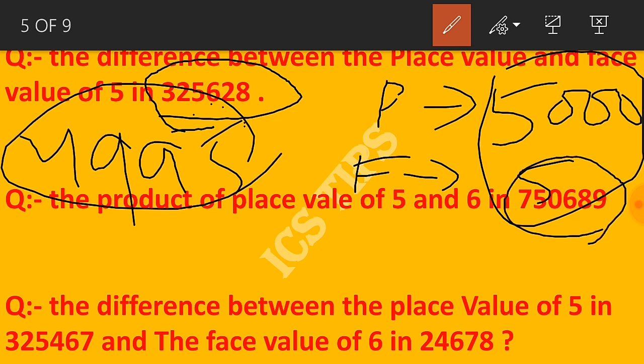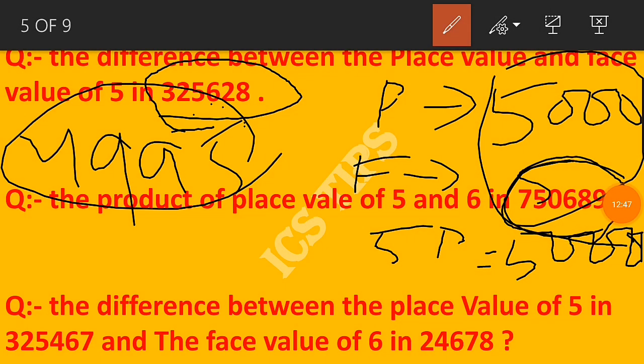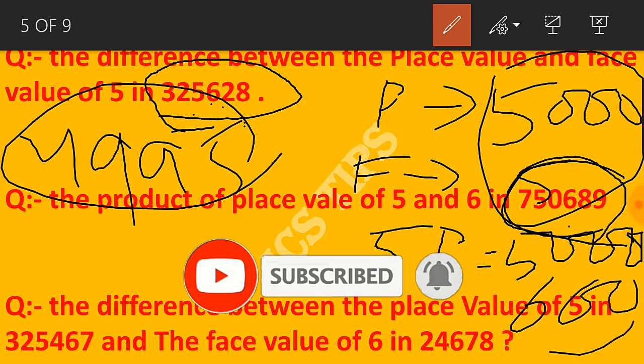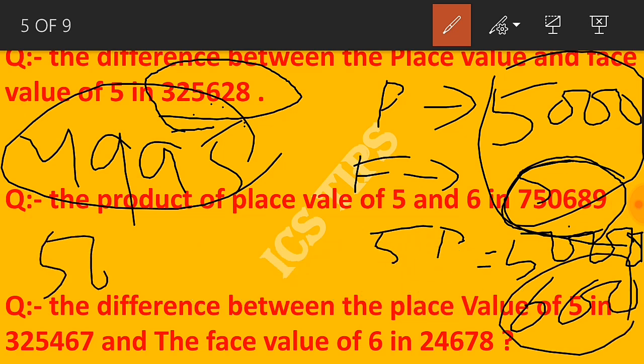The difference is 5,000 minus 5 equals 4,995. Next question: Find the product of place values of 5 and 6 in 750,689.